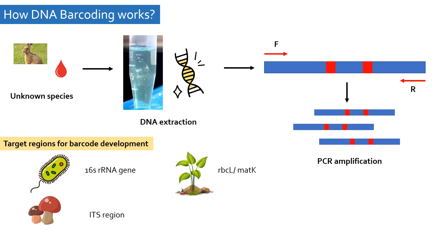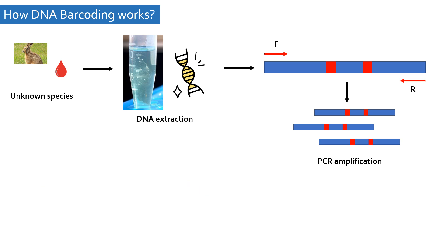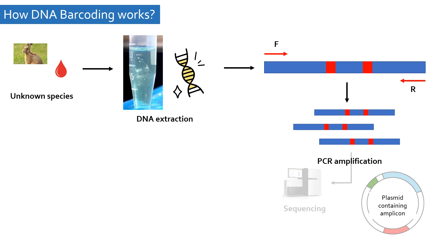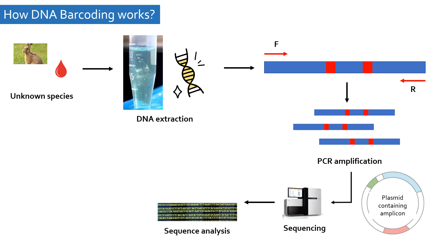In animals, the segment of the mitochondrial gene cytochrome C oxidase serves as the target region for developing the DNA barcode. A set of universal primers are used to amplify one or more of these target regions for PCR amplification. These primers are conserved to work in all species of a particular taxonomic group. The amplified DNA is then purified, cloned in a vector, and sequenced using a sequencer to obtain the exact sequence of the target barcode region.